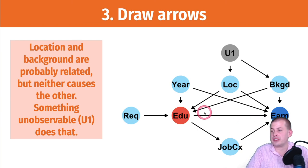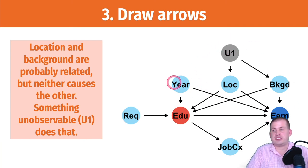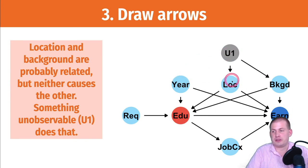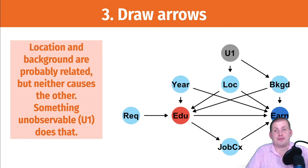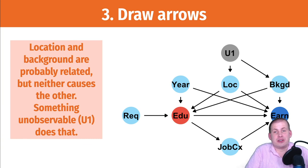What you're left with is a graph with all sorts of nodes and arrows where nothing is cyclical. If you start at 'year,' you can't end back up at 'year.' If you start at 'unobserved stuff,' you can go to location or earnings, but you can't get back to job connections or education — there's no way to return to any node you started at. That means it's acyclic and it's a graph, so it's a DAG.